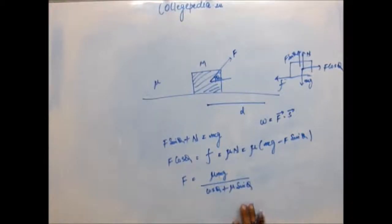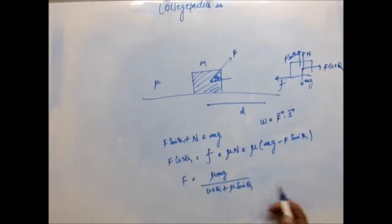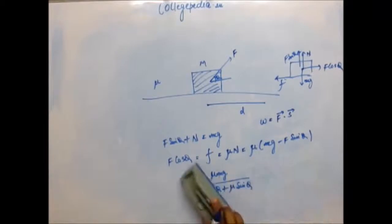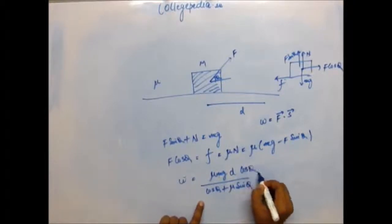Fine, so you have found F. Now it is a cakewalk from here. The work done would be F dot ds. F dot ds is F into displacement into cos θ, so work simply would be F into D into cos θ.